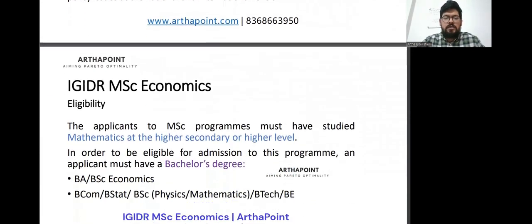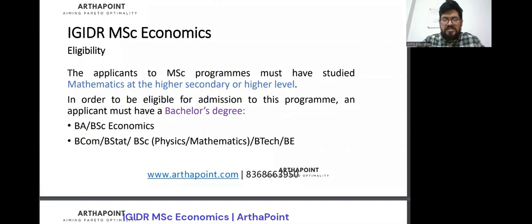Now, let's see what's the eligibility at IGIDR. For any student who wants to get admission at IGIDR to pursue MSc Economics, first of all, you have one of the major filtering points wherein out of 100, many students will go out at the very first eligibility criteria, which is mathematics at higher and higher secondary or higher level. Basically, they require you to have maths in your plus two.